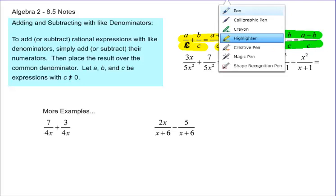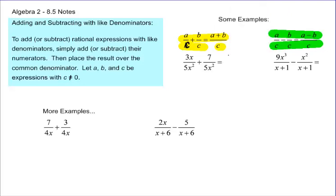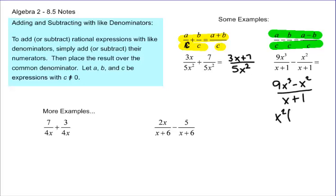So how that would look in real life: if my denominators are the same, I add the tops. That's just going to be like 3x plus 7 over 5x squared. Because the denominators are the same, I just add the tops. I cannot put 3x with 7 — they are different. On the flip side, over here I've got x plus 1 as my common denominator, so that would be 9x cubed minus x squared over x plus 1. We would check if this reduces — we could factor out the x squared, and that would give us 9 times x minus 1, and it doesn't factor. So we're good on that.